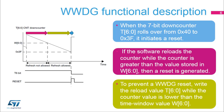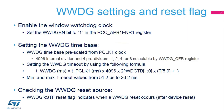To prevent a window watchdog reset, the reload value T6-0 bits must be written while the counter value is lower than the time value window W6-0 bits, located in the green area. To enable the window watchdog clock, set the WWDGEN bit in the RCC APB1 ENR1 register.